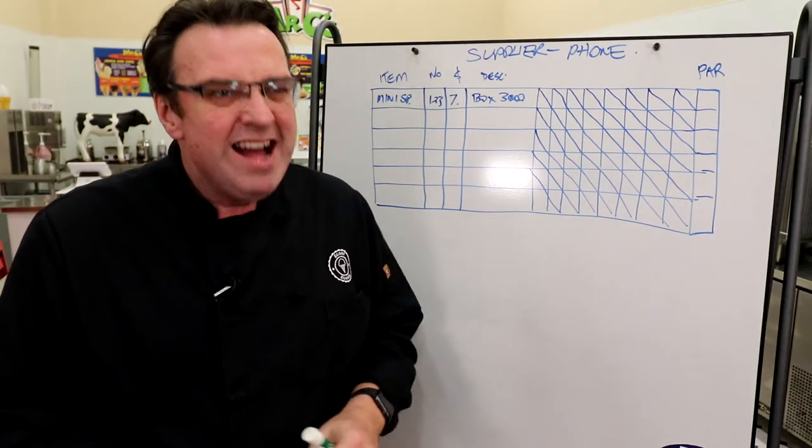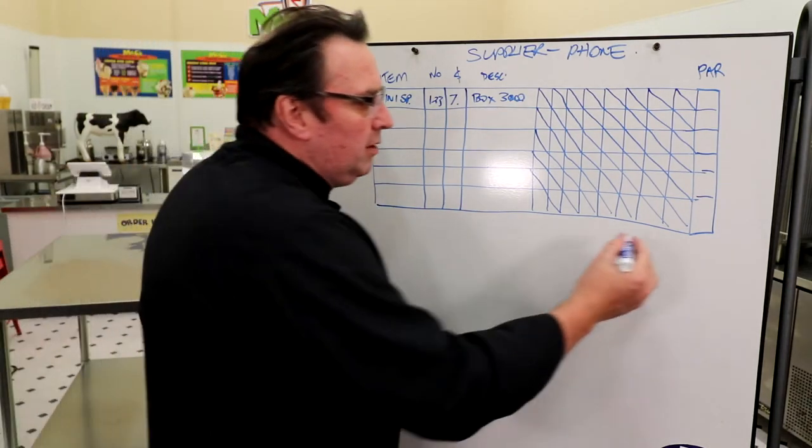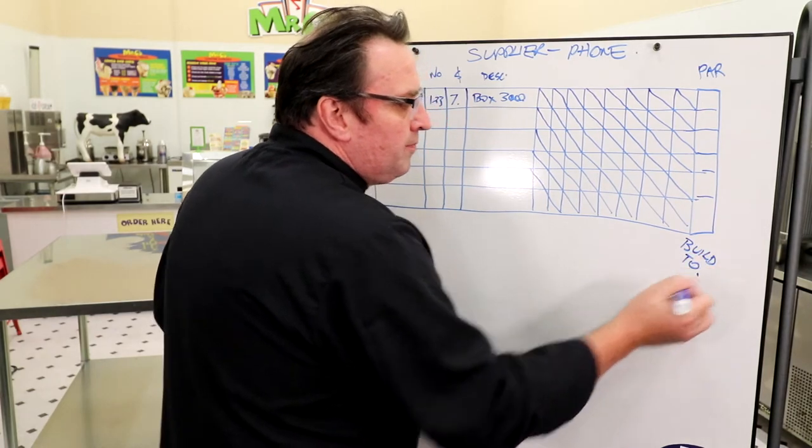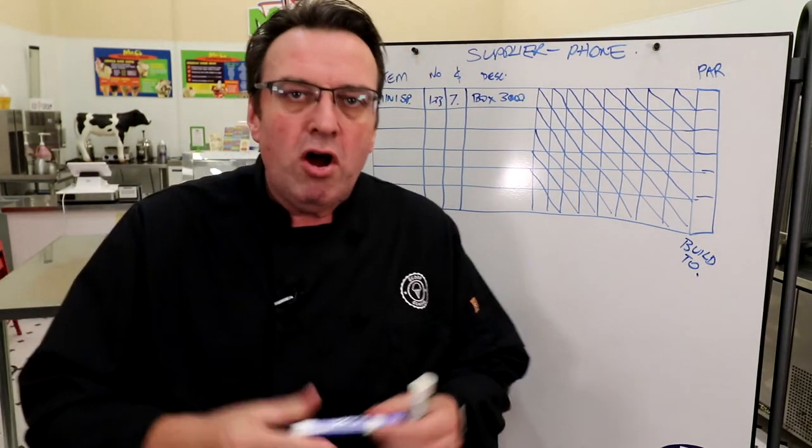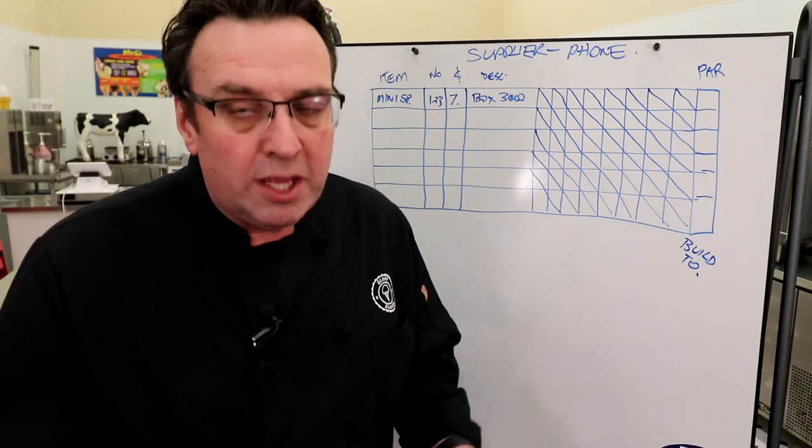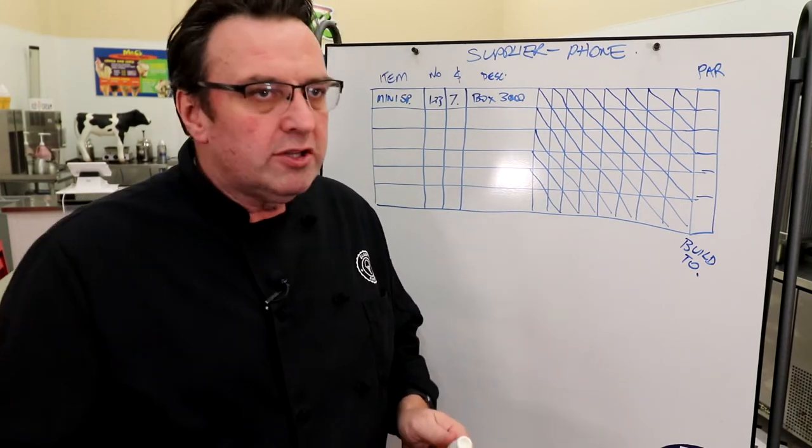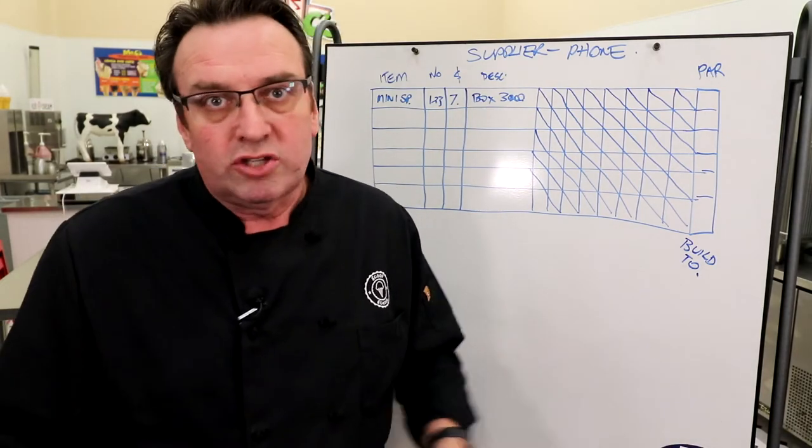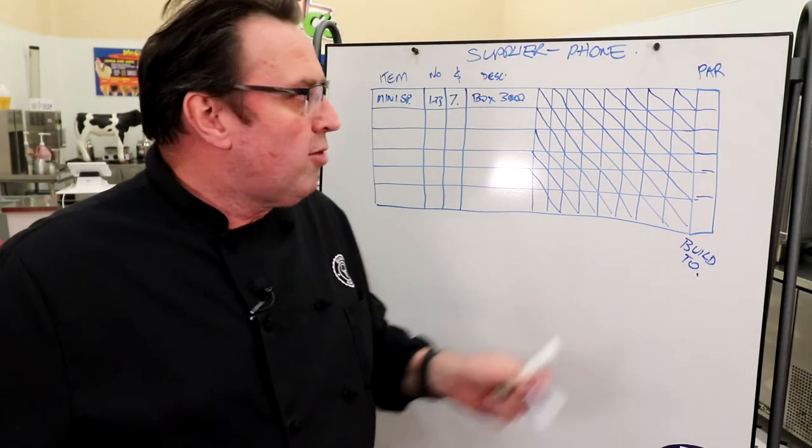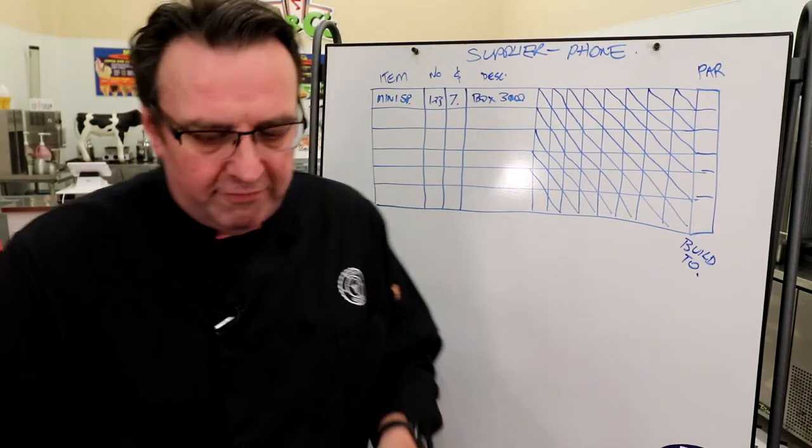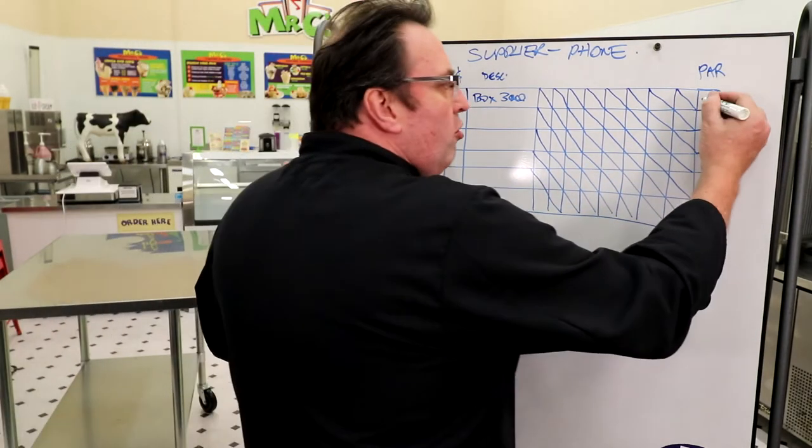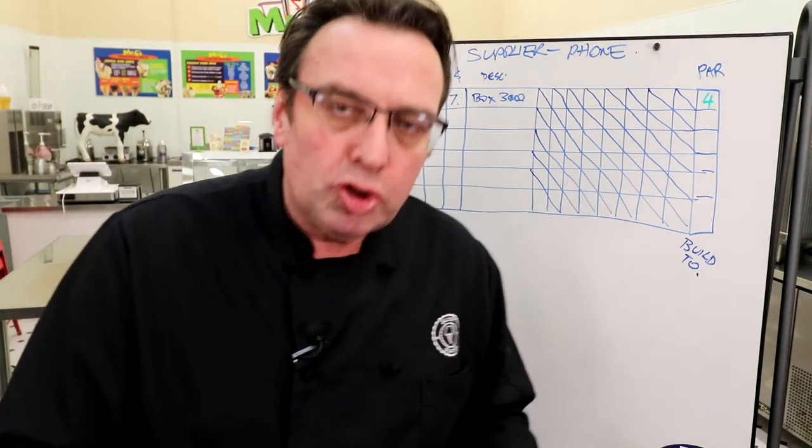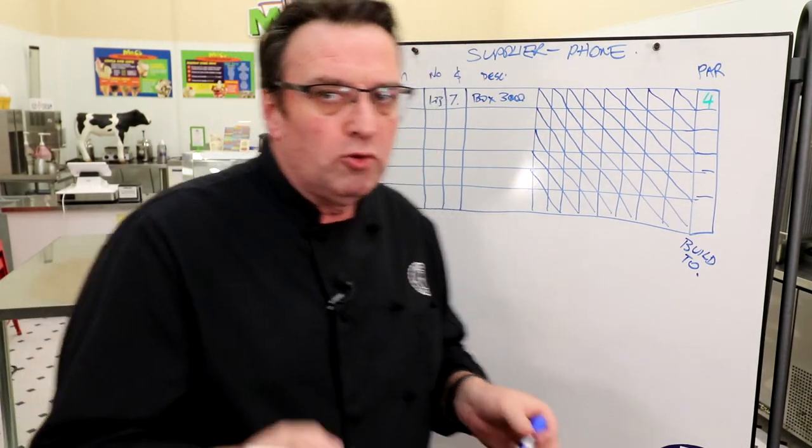I say par, you say par. It's also called a build to number. And it's basically the number of these items that you should keep in inventory. So, you talk to the supplier and say, as a general rule, how many of these boxes should I have in inventory? They might say, keep four in inventory. So, we're going to write a four in here. So, my par number or my build to number for my mini spoons is four.